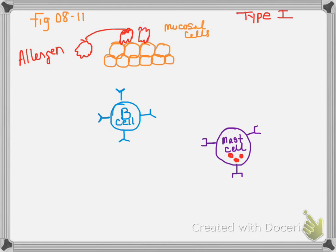And the allergen is then going to go through the mucosal cells. And it is going to attach itself to the B cells. The B cells are then going to produce IgE. And IgE is then going to attach itself to mast cells.